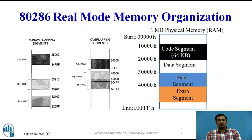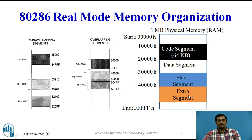In real mode, the 80286 microprocessor can address 1 megabyte of physical memory, which is divided into 16 logical segments each of 64 kilobytes in size. At any instant of time the microprocessor has access to only 4 segments: the code segment, data segment, stack segment, and extra segment. These segments can be of two types — either non-overlapping or overlapping segments.